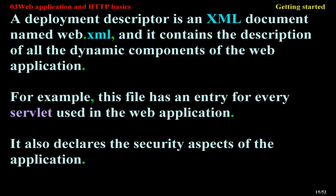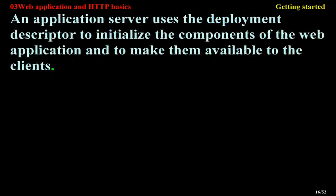A web application is described using a deployment descriptor. A deployment descriptor is an XML document named web.xml, and it contains the description of all the dynamic components of the web application. For example, this file has an entry for every servlet used in the web application. It also declares the security aspects of the application. An application server uses the deployment descriptor to initialize the components of the web application and to make them available to the clients.